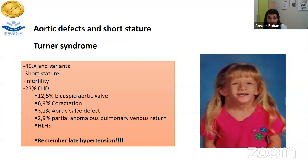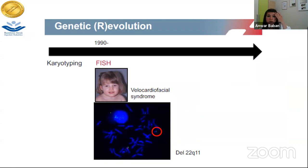Going deeper into cryptic chromosomal abnormalities, we find the classic microdeletion of 22q11 — the velocardiofacial or DiGeorge syndrome.